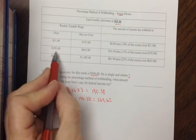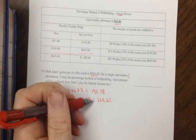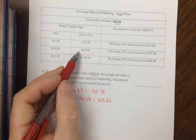Obviously, it falls in the second row. So, $369.62 is more than $195 but less than $645.